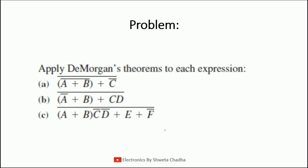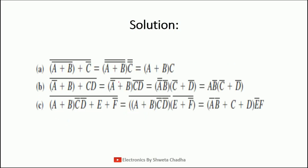Here are a few more problems based on De Morgan's theorem. The first is (a plus b) whole bar plus c bar, all whole bar. The second is a bar plus b plus (c dot d) whole bar, all whole bar. The third is a plus (b dot c bar dot d bar) plus e plus f bar, all whole bar. Let us simplify these problems where we have to apply De Morgan's theorem multiple times. For the first example, we take the plus as the middle portion and separate the whole bar into two segments.